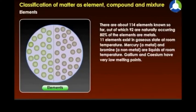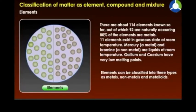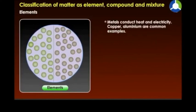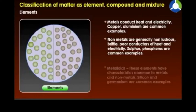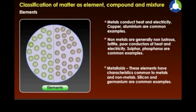About 80% of elements are metals. Eleven elements exist in gaseous state at room temperature. Mercury, a metal, and bromine, a non-metal, are liquids at room temperature. Gallium and caesium have very low melting points. Elements can be classified into three types: metals, non-metals, and metalloids. Metals conduct heat and electricity — copper and aluminum are common examples. Non-metals are generally non-lustrous, brittle, and poor conductors of heat and electricity — sulfur and phosphorus are common examples. Metalloids have characteristics common to both metals and non-metals; silicon and germanium are common examples.